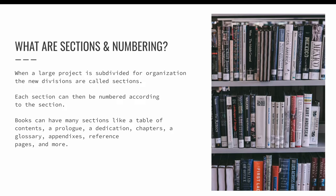Each section can then be numbered according to the section. Books, for example, have many sections, like copyright information, a table of contents, a forward or a prologue, a dedication, many chapters, a glossary, appendices, reference pages, and more. Each subdivision of the book is defined as its own section for organization purposes, and then each section can be numbered as needed.